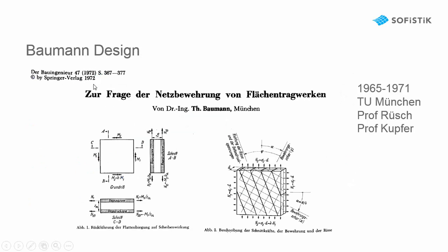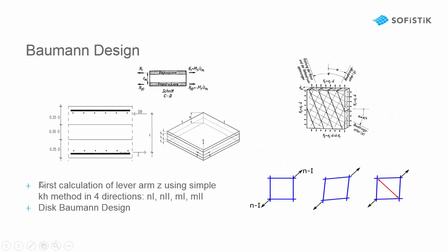The Bauman design was first set in 1972 by Dr. Bauman at the Technical University of Munich. It divides the forces into two disks on top and on bottom. And these disks are then designed using the real reinforcement direction. To get the lever arm we use four simple uniaxial designs for the main normal force direction and the main bending moment direction. Then the forces are transformed to an upper and lower disk and designed according to Bauman that is including the compression strut.